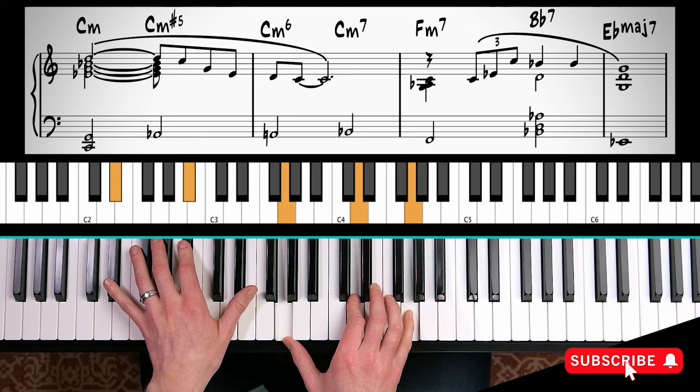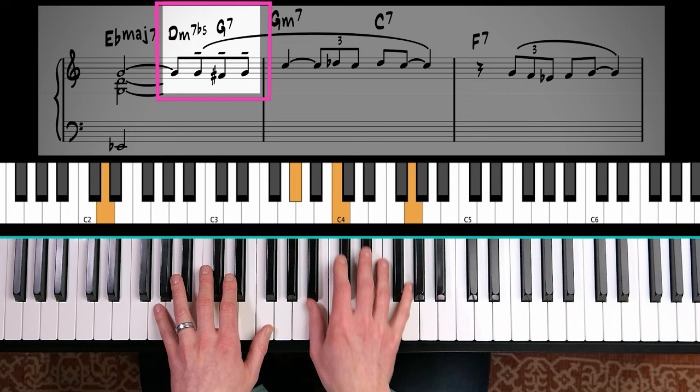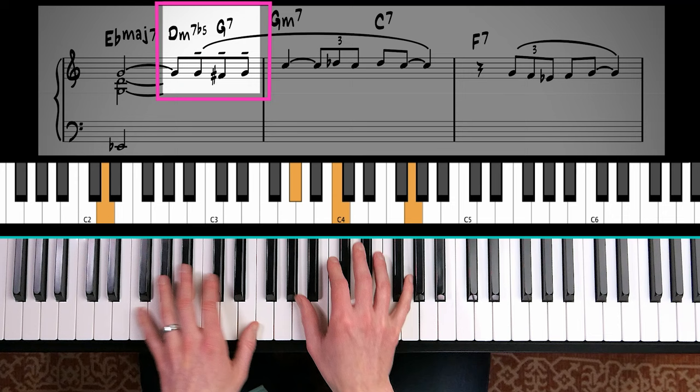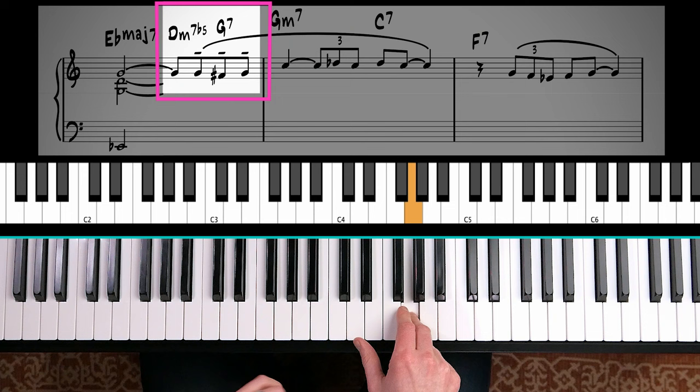Now next we have a two, five, D half diminished and G seven. That's a two, five in C minor. This is a half diminished two chord. However, the melody plays this pattern. It goes starting note, down a half step and back.